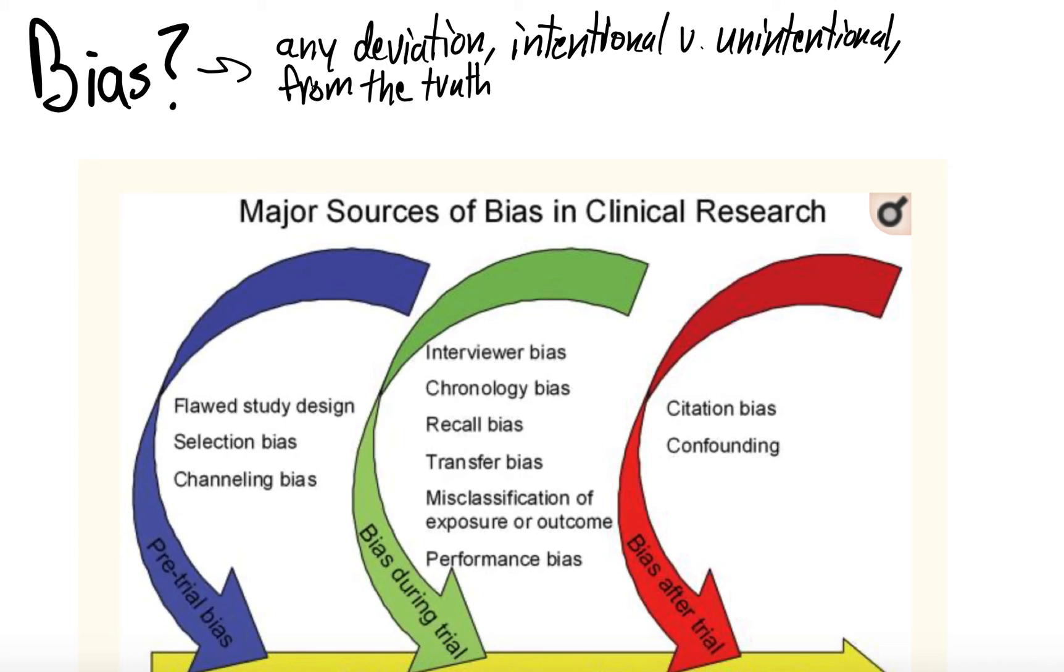So in research, bias is something that we talk about quite frequently because it can be detrimental to a conclusion. If a study has a lot of bias and we don't identify it and we trust the conclusion as is, that conclusion may be incorrect. And if we apply an incorrect conclusion to patient care, patients can get hurt.